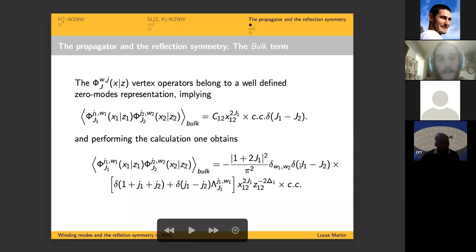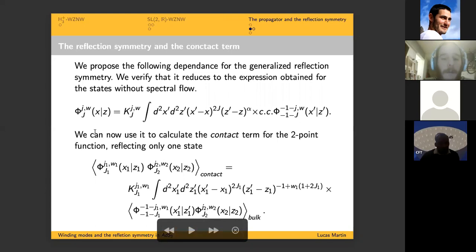From our perspective we are lacking the dependence of 1+big J+big J. We are going to name this term only the bulk term of the propagator and we have to find a new reflection symmetry for this capital J states so we can obtain the contact term with the dependence of delta 1+big J+big J.